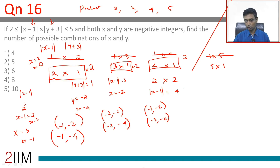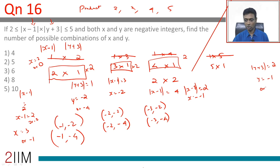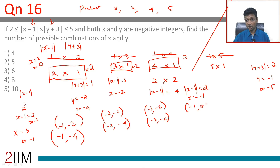For 2×2: |x-1| = 2 gives x = -1. |y+3| = 2, so y+3 = 2 or -2, giving y = -1 or y = -5. Both are negative integers. So we have (-1, -1) and (-1, -5) — two more possibilities.